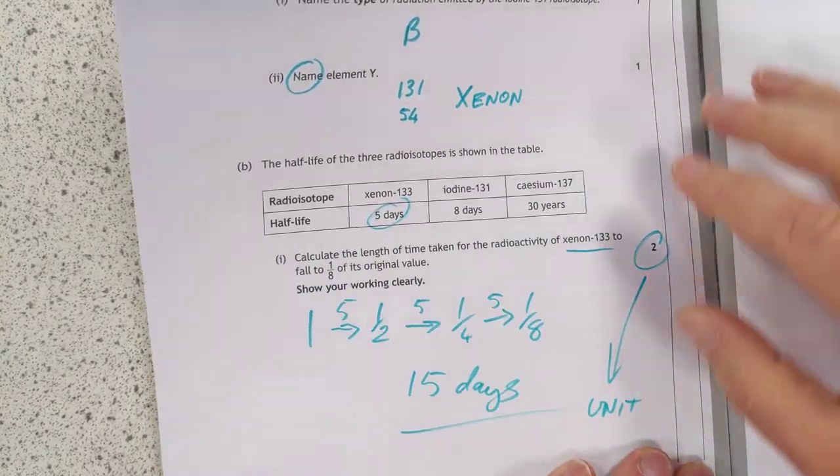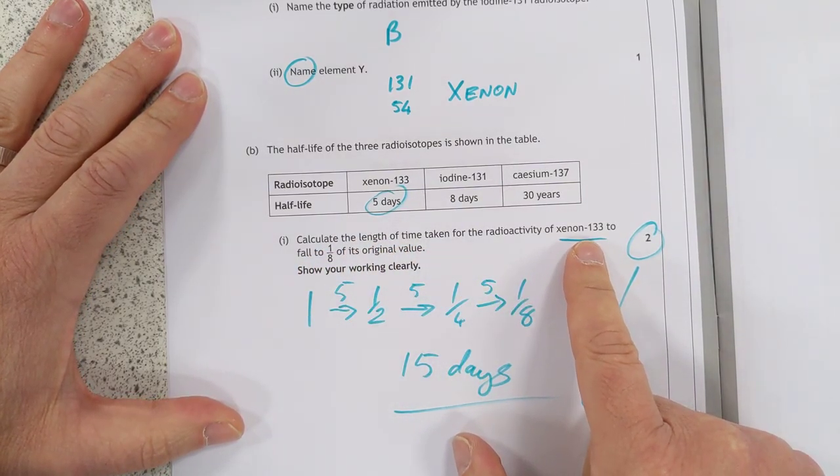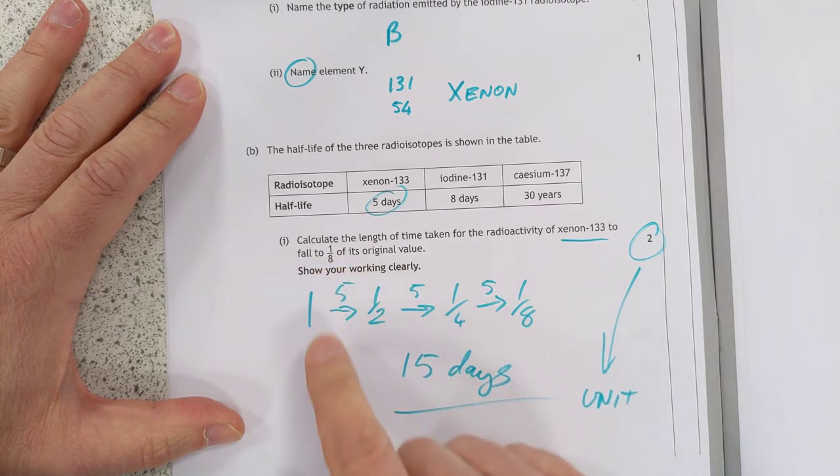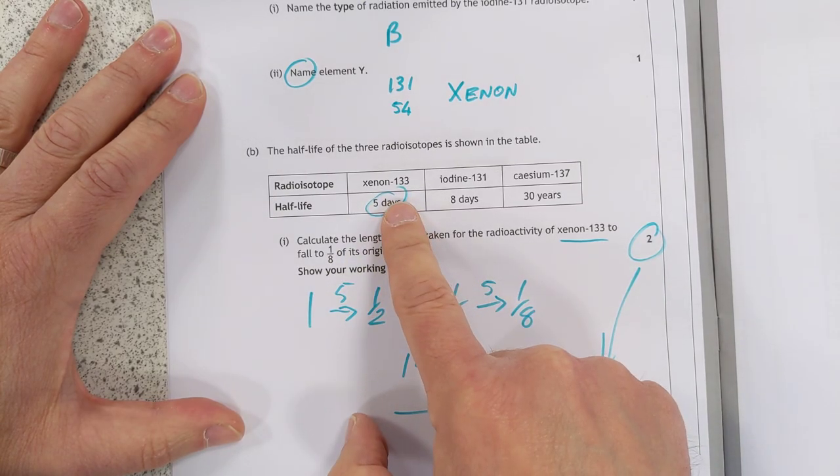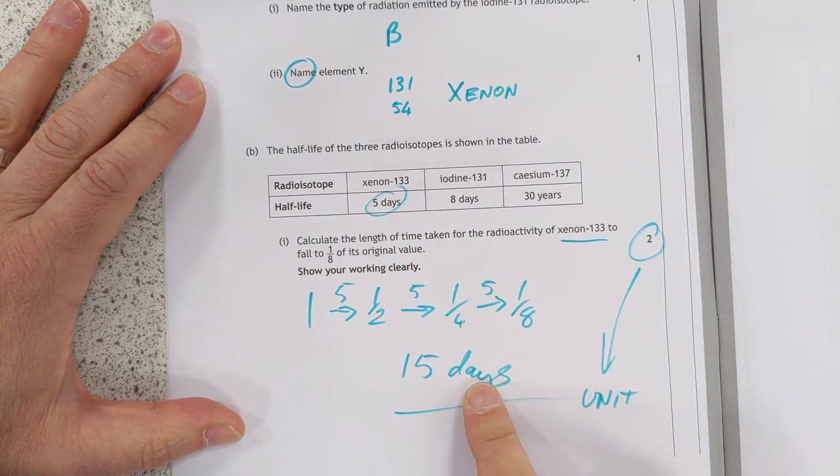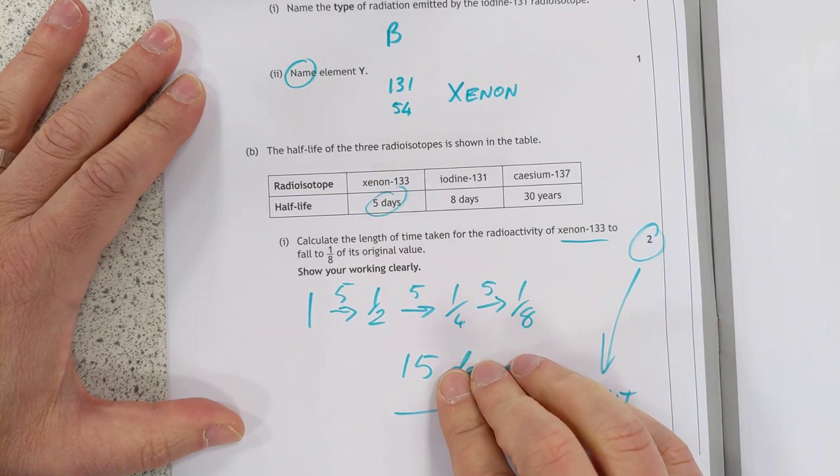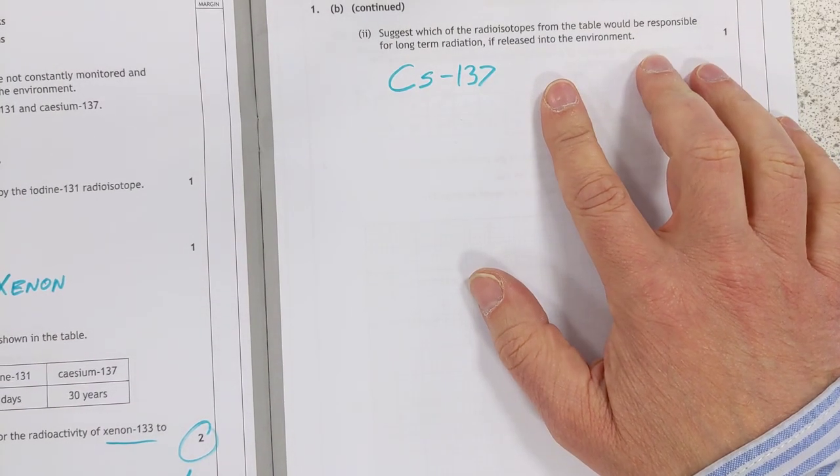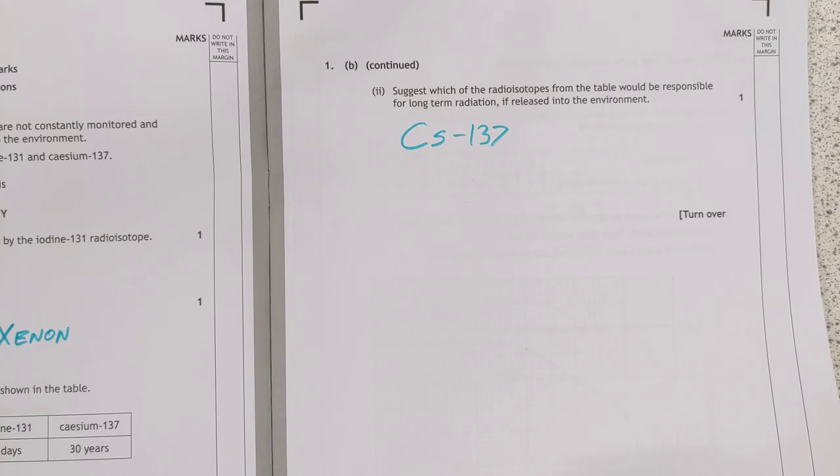Half-lives of three isotopes shown in the table. Half-life calculations, guys. Calculate the length of time taken for xenon 133. Oh, right, three different half-lives to pick from. Yeah, that's why it's worth two marks. To fall to an eighth of its value, so you start at one, and go down to a half, and then a quarter, then an eighth. And each of these drops takes five days, so therefore the total is 15 days. I think you'll probably need to include the unit on this one, because that's why that's in years, to stop you just putting 15. It's a sneaky question. I do like that one, actually. It's a nice question.